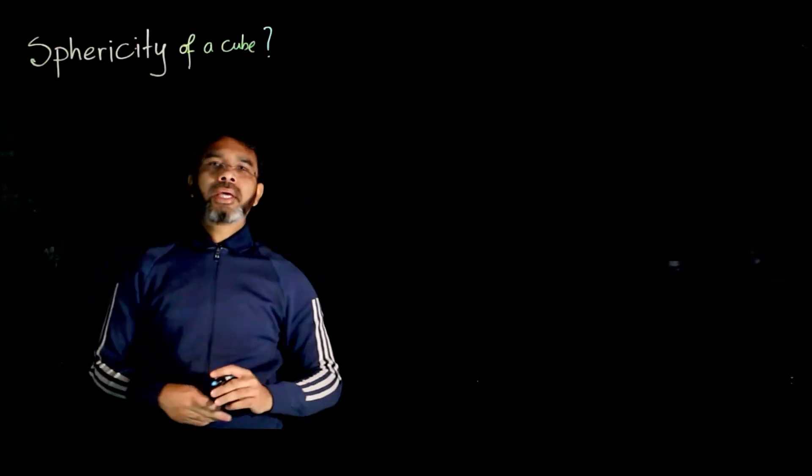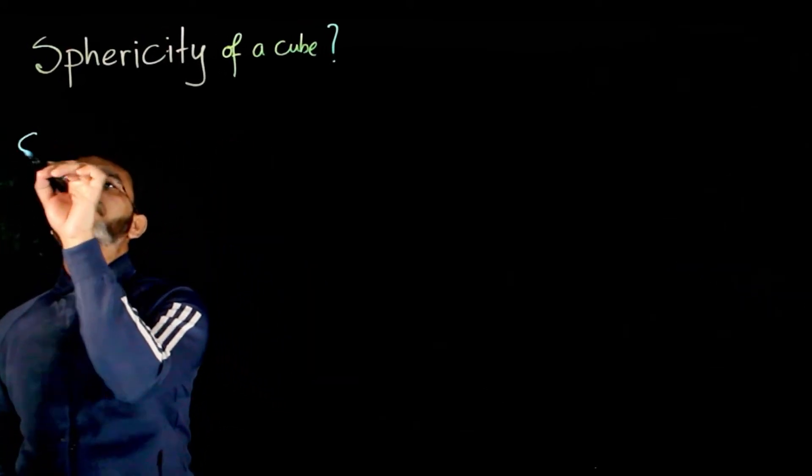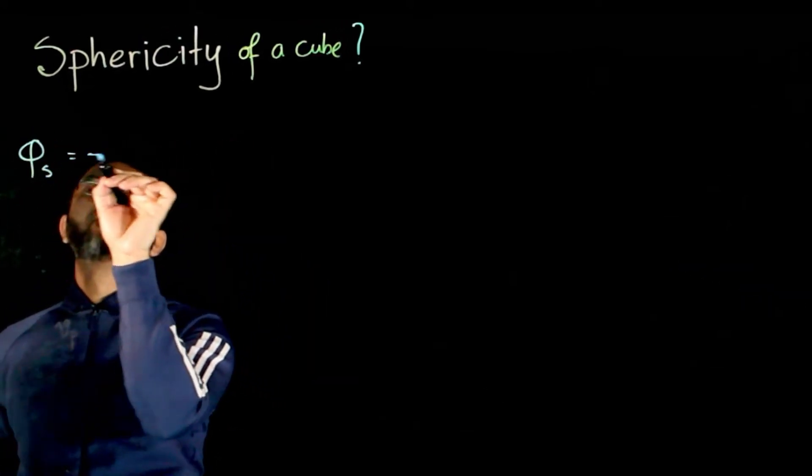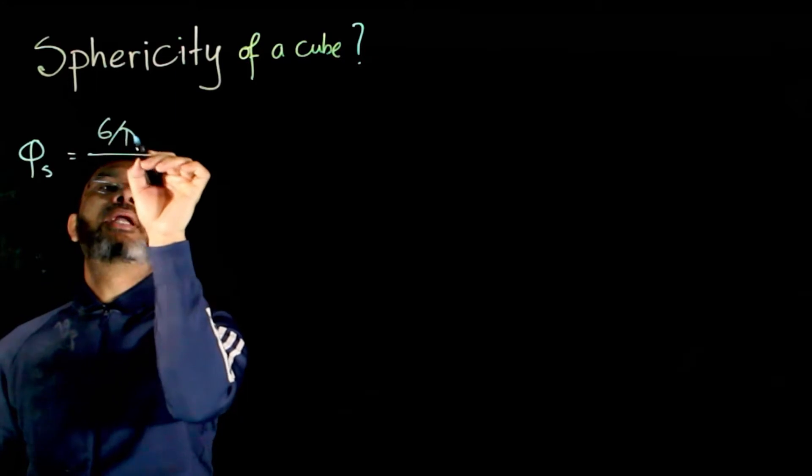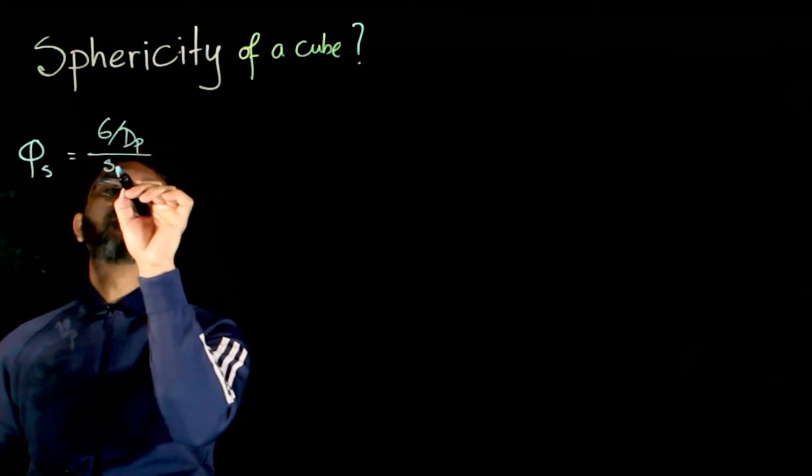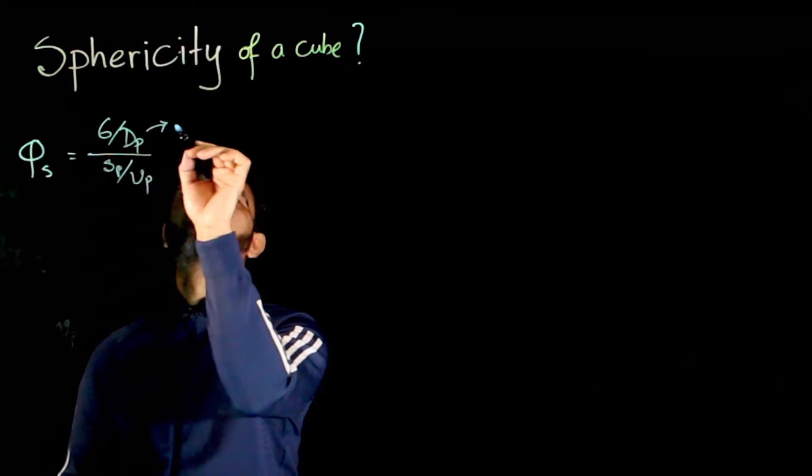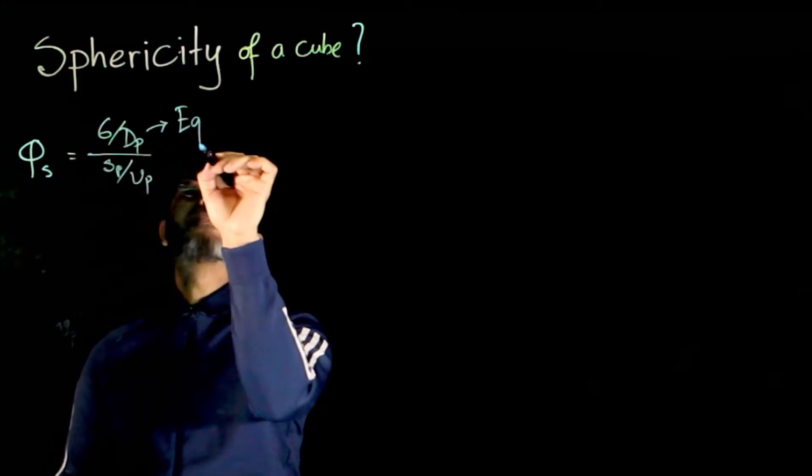Now, what is the sphericity of a cube? We know the definition of sphericity to be 6 over dp, sp over vp, where dp is the equivalent diameter of the particle.